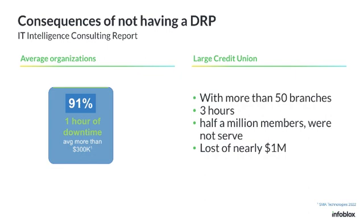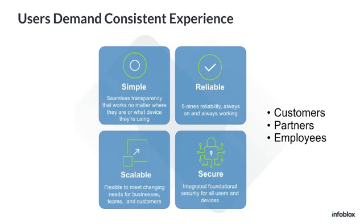Consequences of not having a DRP. According to an IT Intelligence Consulting Report from 2022, at one hour of downtime, the average cost is more than $300,000 — and that's about 91% of organizations that suffer an outage. Similarly, a large credit union with over 50 branches experienced a three-hour downtime where half a million members were not served, and there was a loss of nearly $1 million in revenue. This is what users expect: simple, reliable, scalable, and secure infrastructure. Whether it be your customers, your partners, or employees, they all want your service up and running 24/7.